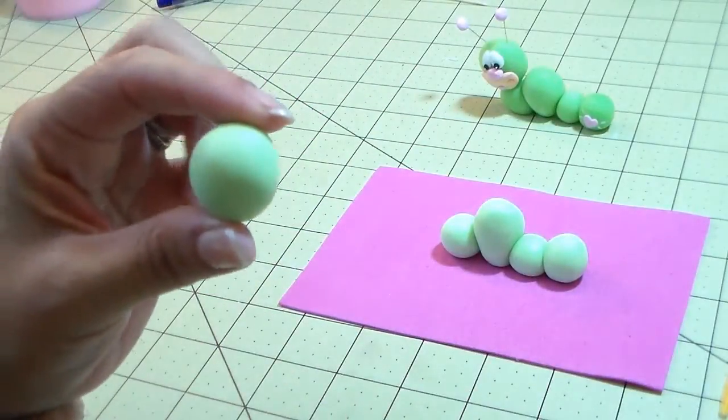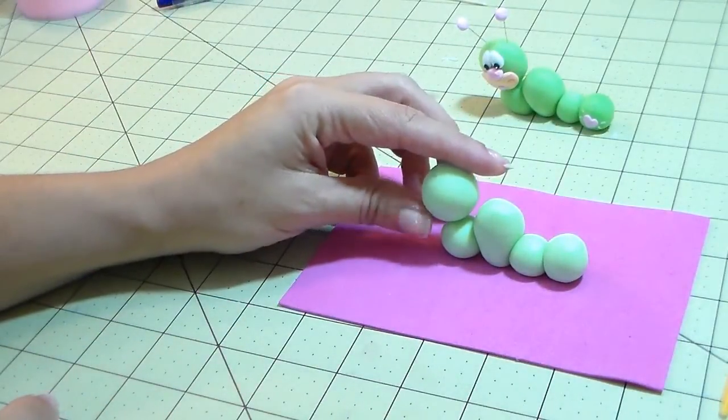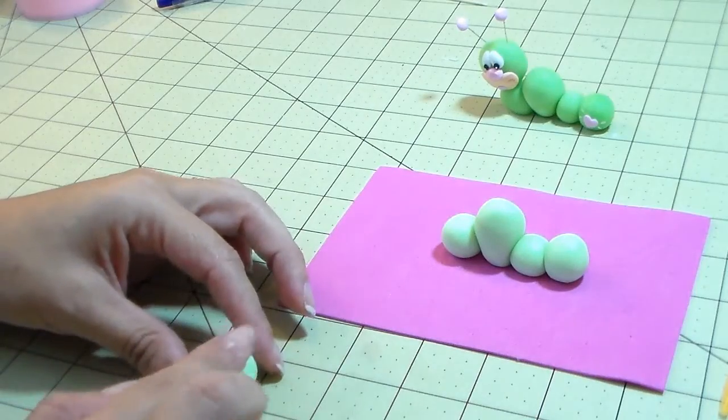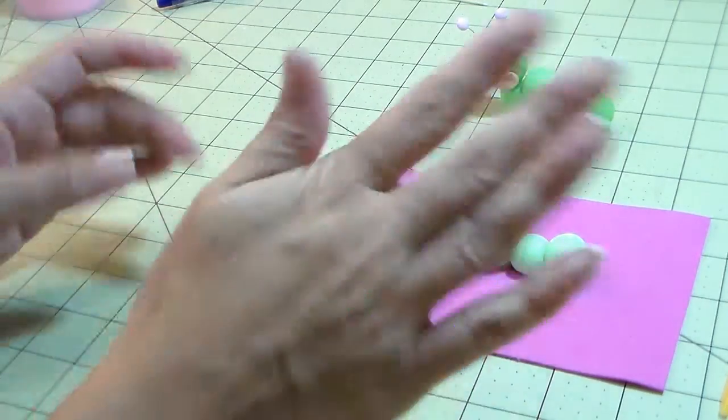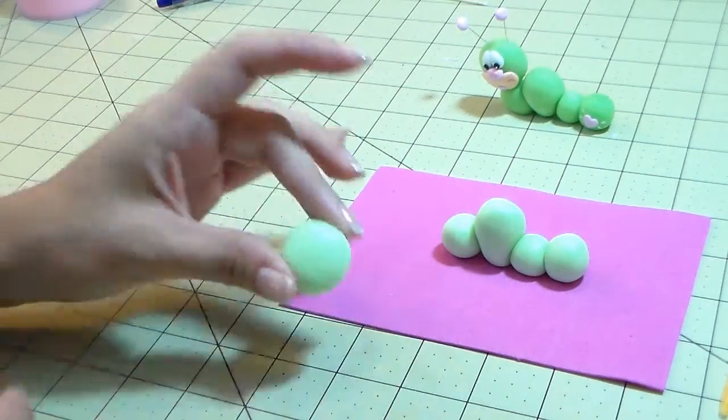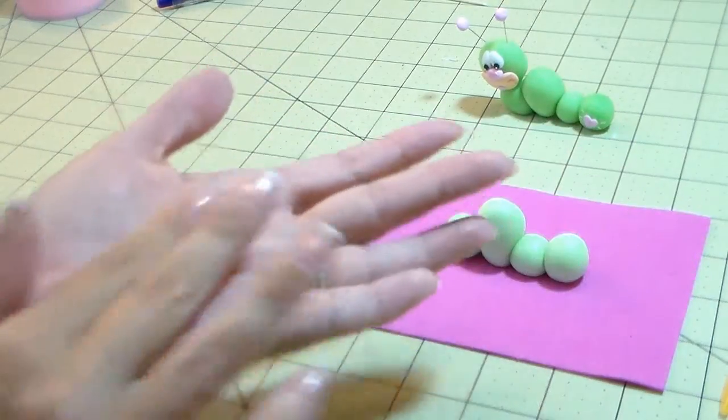Now I made a little bigger ball for the head, so you measure because you want the head to be a little bigger. You flatten it just a tiny bit on the table.